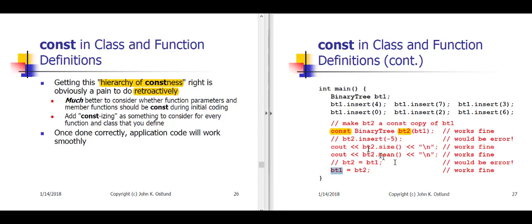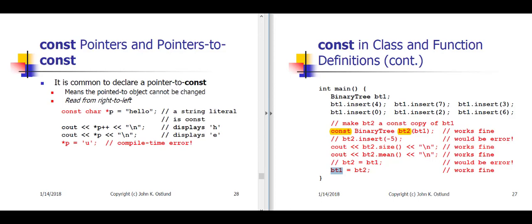Now, the fourth thing we're going to look at as far as const is const pointers. Now, it may sound like we've already done this, but in fact what we've done already is pointers to const, which are a different thing. So, here we have an example of a pointer to const. P is a pointer to a char const.